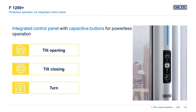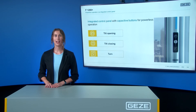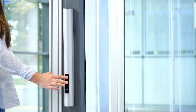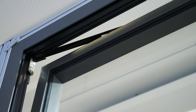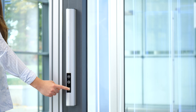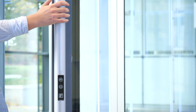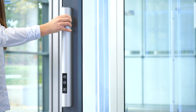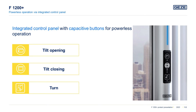Under normal conditions, the F1200 Plus is supplied with power and functions can be selected by the user via the buttons without any effort. By selecting the icons, it is clear which action is possible by the respective button command — especially advantageous in hotels where room users change frequently. The tilt icon represents the tilt position, the closed window icon represents closing and locking, and the lower icon represents turning or locking in the turn position. The drive movement can be interrupted or stopped at any time by selecting one of the three buttons.